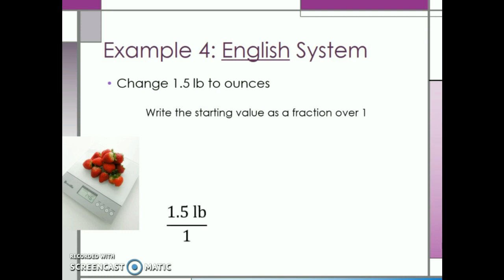Then we need to set up a conversion factor. Since we initially have pounds in the numerator, we will need to put pounds in the denominator of our conversion factor. Then we can use our table to find a conversion factor for pounds to ounces. We see that one pound is equal to 16 ounces. Since we already placed pounds in the denominator of our conversion factor, we will stick the one in front of it and put 16 ounces in the numerator.